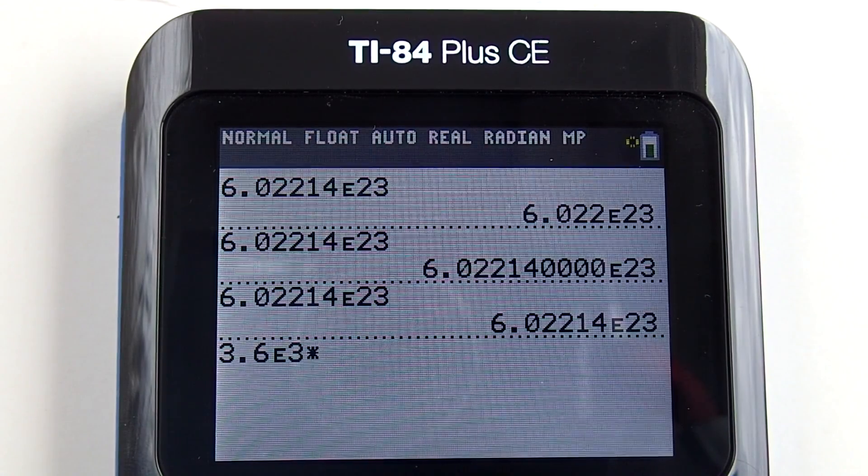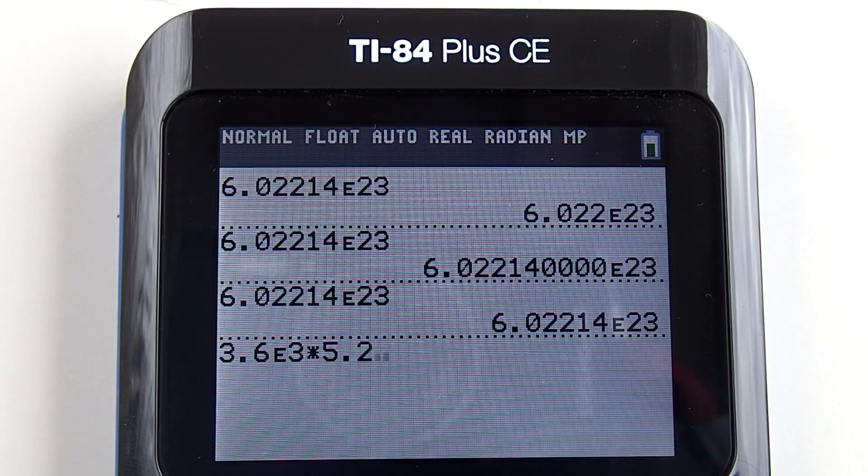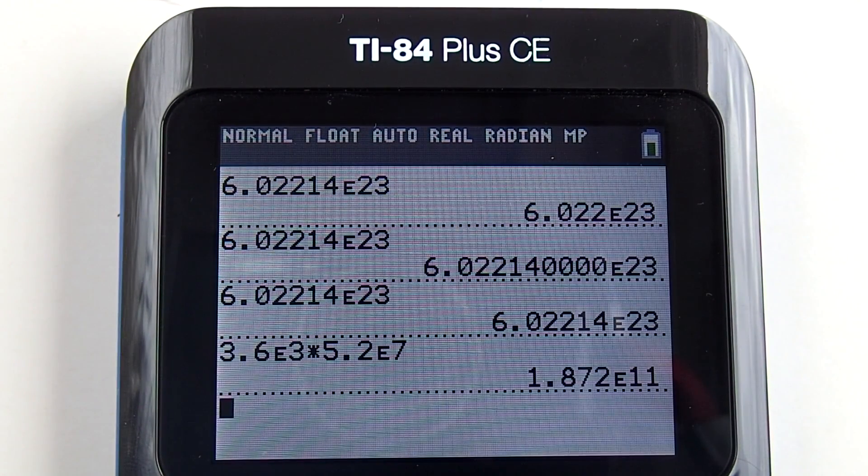multiply key, 5.2 second comma 7, and our answer is 1.872 times 10 to the eleventh.